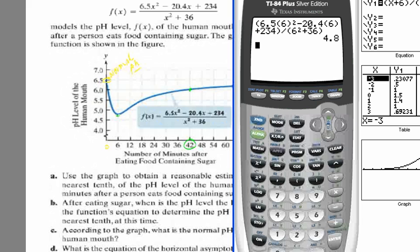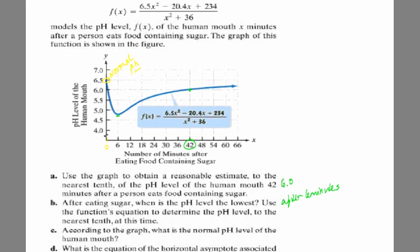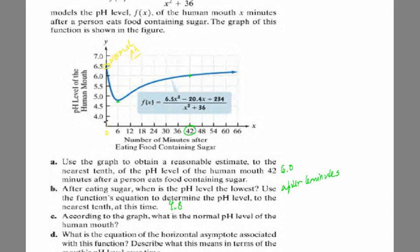So after six minutes, the pH level seems to be the lowest, and the lowest value that the model gives us is 4.8. So I've used the functions equation to determine the pH level to the nearest tenth at that time. So that is 4.8. According to the graph, what's the normal pH level of the human mouth? Well, it's what we had set up here. Initially, the mouth has a pH level of 6.5. Then we see it get low and then again start to recover over time. So I would assume the normal pH level is 6.5.